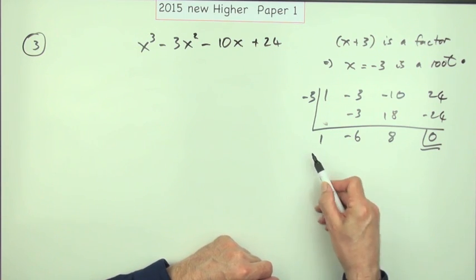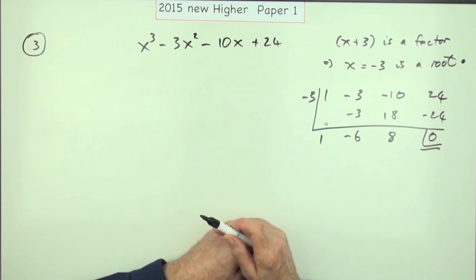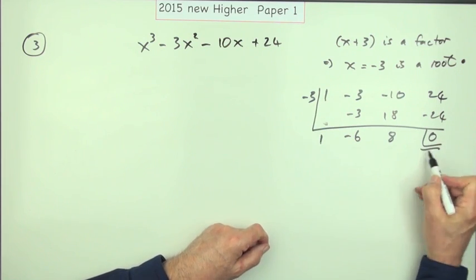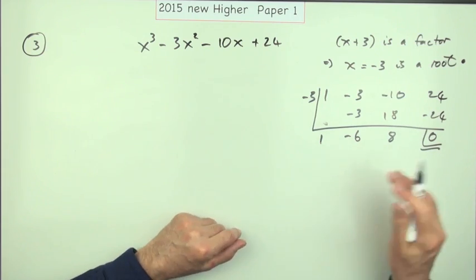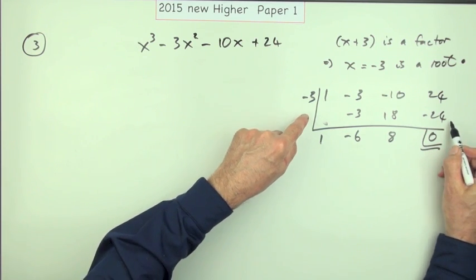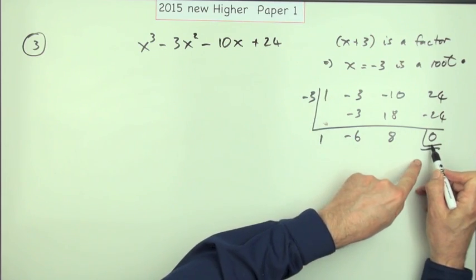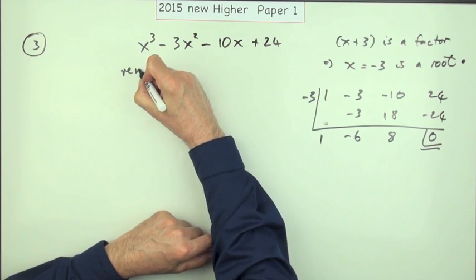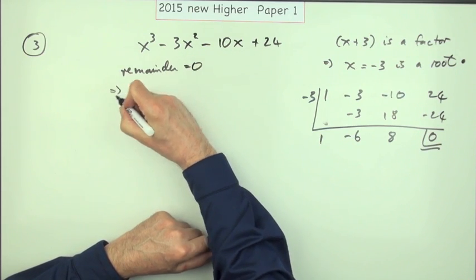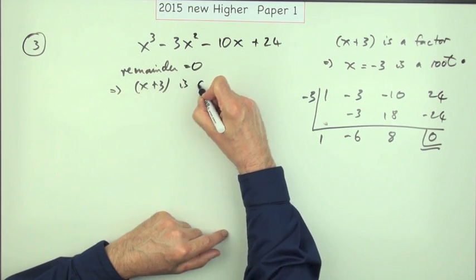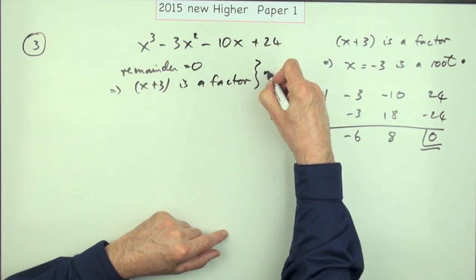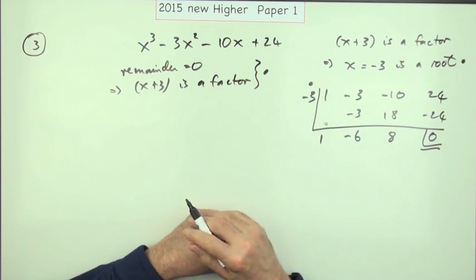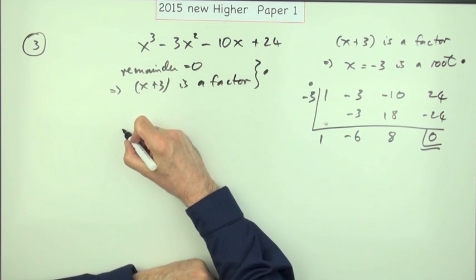It's actually an evaluation table that also conveniently doubles as a synthetic division table, giving the same figures you'd get from proper division — another way of showing it divides in. When you get 0 at the end, don't just box it off and leave it. You have to make the statement: remainder equals 0, therefore x plus 3 is a factor. It has to be the two together to get that mark. Knowing to use negative 3 was the other mark — so there are two marks in total.